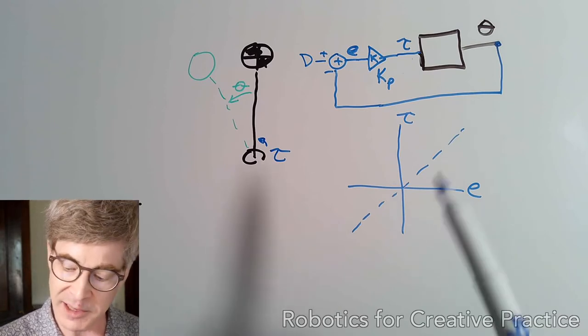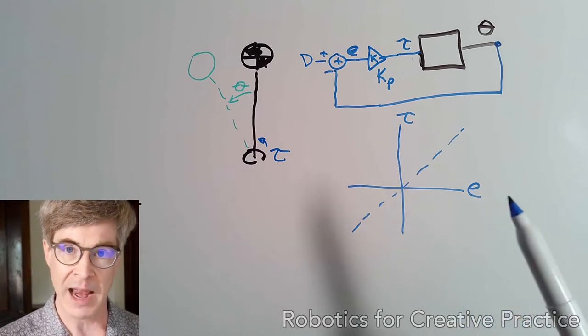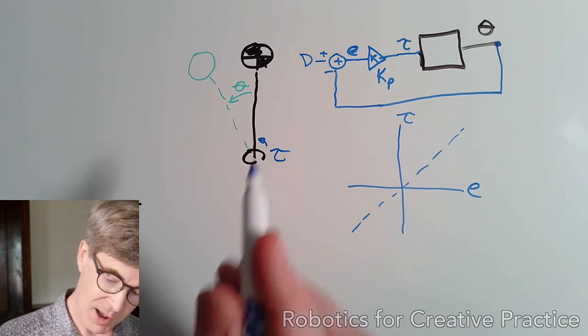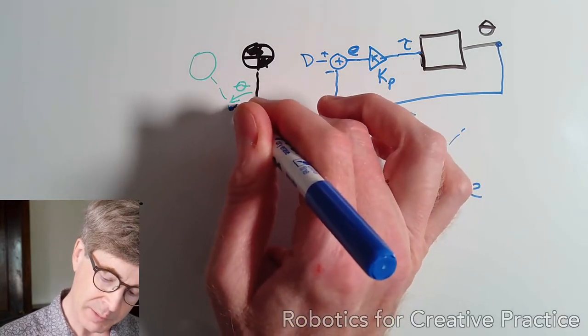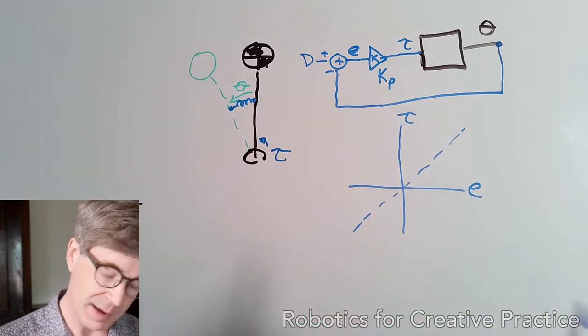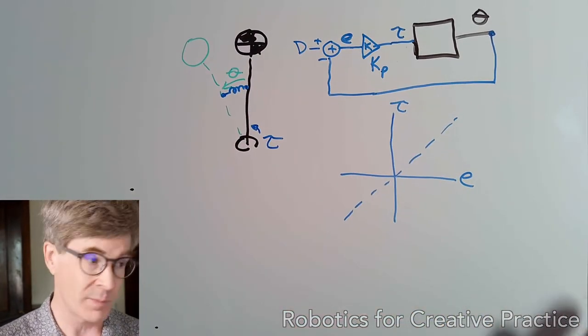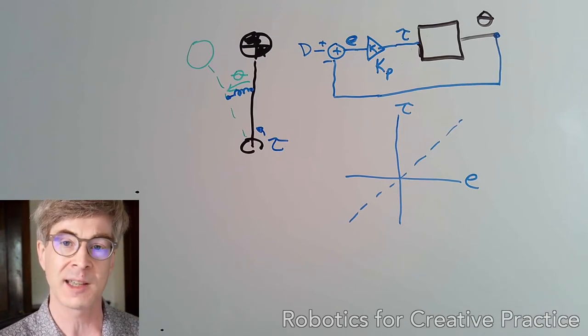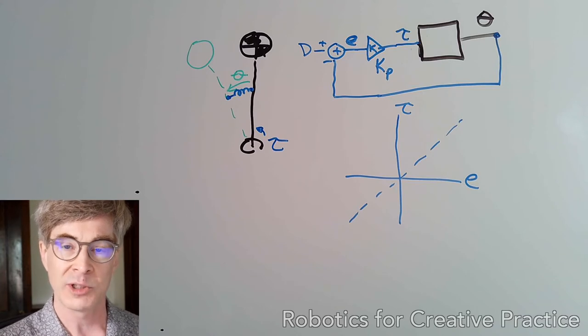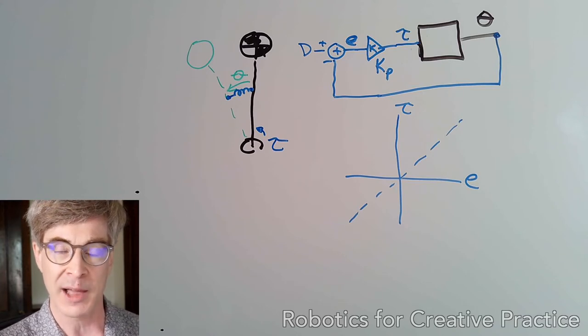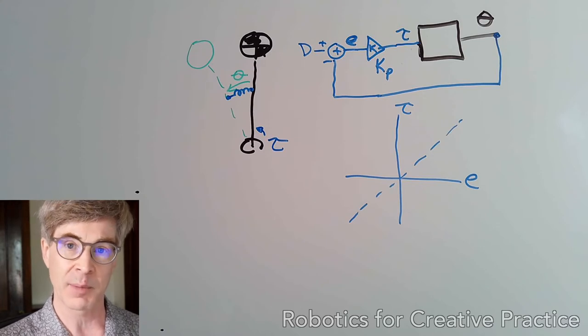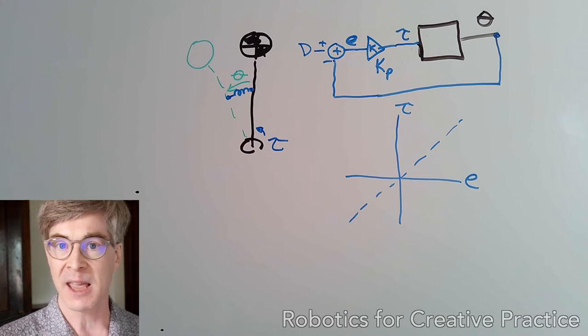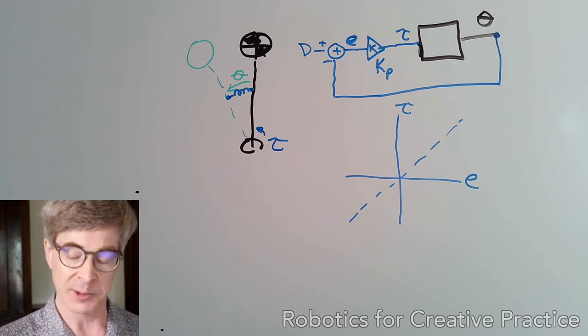So effectively what we've done here by saying that tau is proportional to some error is that we have effectively installed now a virtual spring between the set point and where the mass actually is. It's not a real spring, it's a virtual spring. It's a force that's applied to the system via the torque motor, which is identical to the force that would be applied by a physical spring. So we've simulated a spring, but of course we've used energy to do that because the motor requires energy.